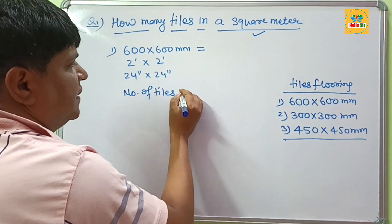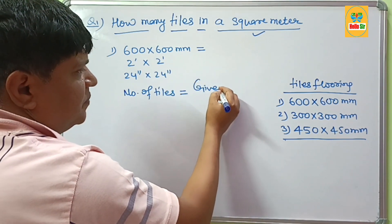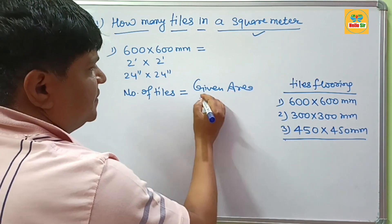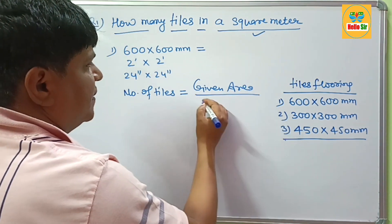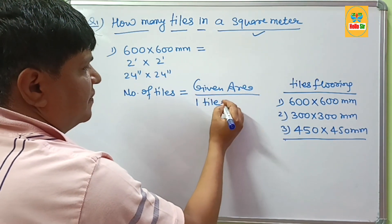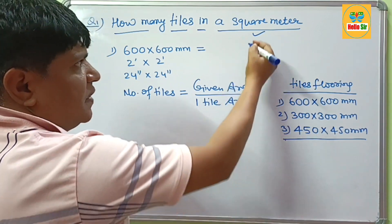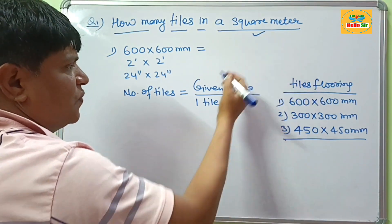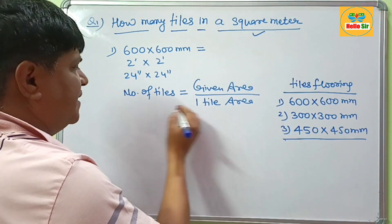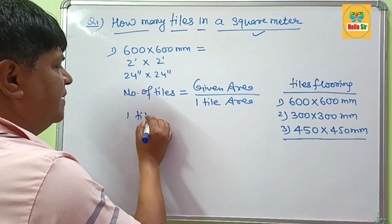Number of tiles in one square meter is equal to the given area divided by one tile area. Your given area is one square meter, and we calculate one tile area separately.